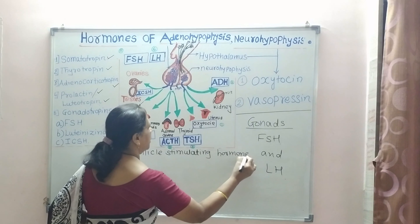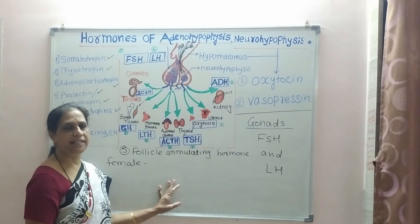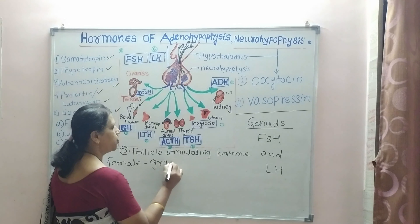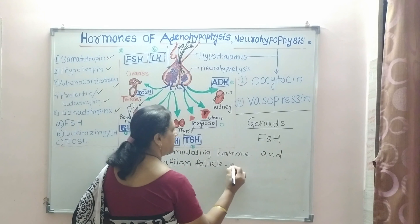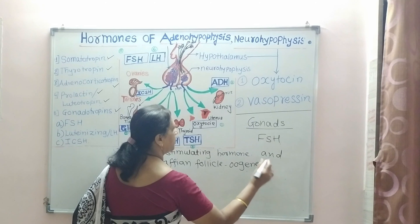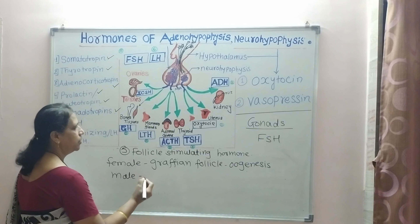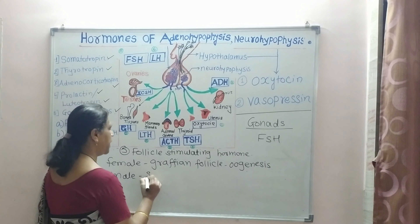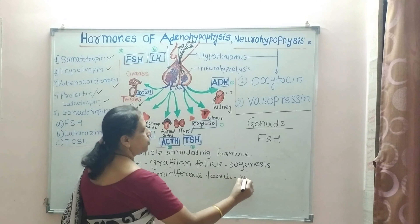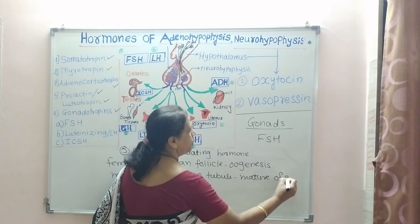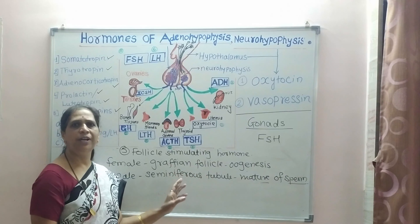In females, FSH stimulates the formation of follicles — primordial follicles mature into Graafian follicles — helping in oogenesis. In males, FSH helps in formation of seminiferous tubules, which are useful for maturation of sperms. So FSH stimulates follicles in both males and females.